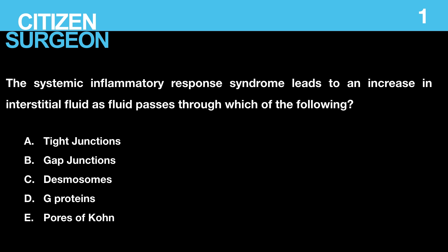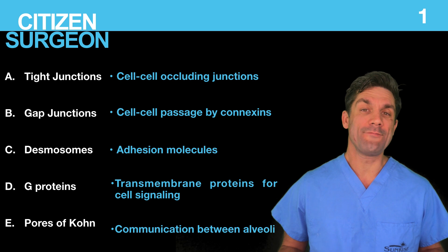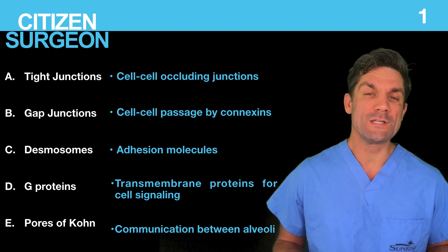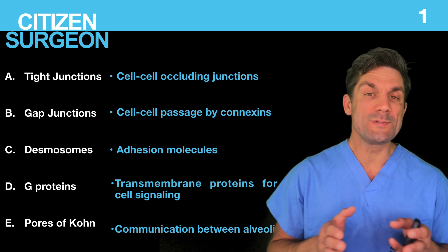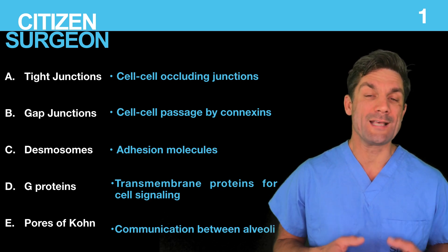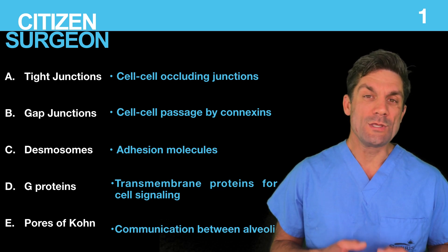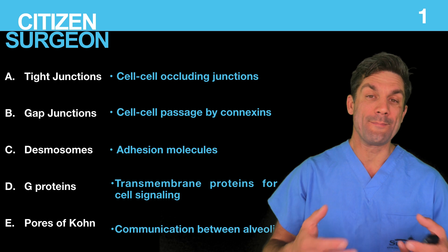Question one: the systemic inflammatory response syndrome leads to an increase in interstitial fluid as fluid passes through which of the following — tight junctions, gap junctions, desmosomes, G proteins, or the pores of Kohn? The correct answer is tight junctions. Tight junctions are the cell-cell adhesion connections between cells, so fluid can or cannot pass between them. In the systemic inflammatory response syndrome, you get a gap in those tight junctions and fluid can pass into the interstitial space.